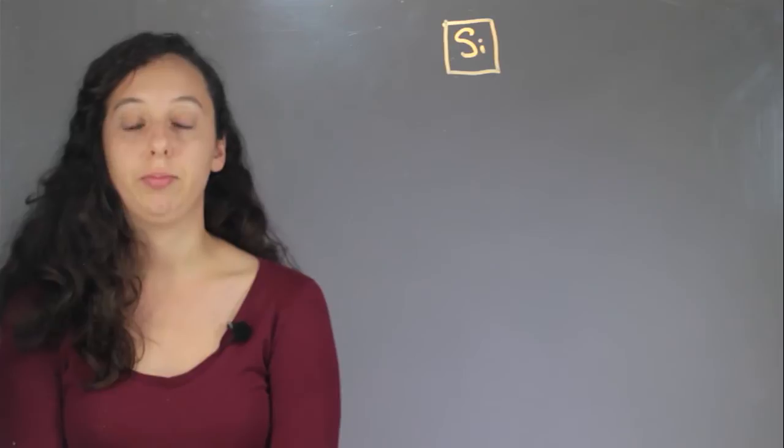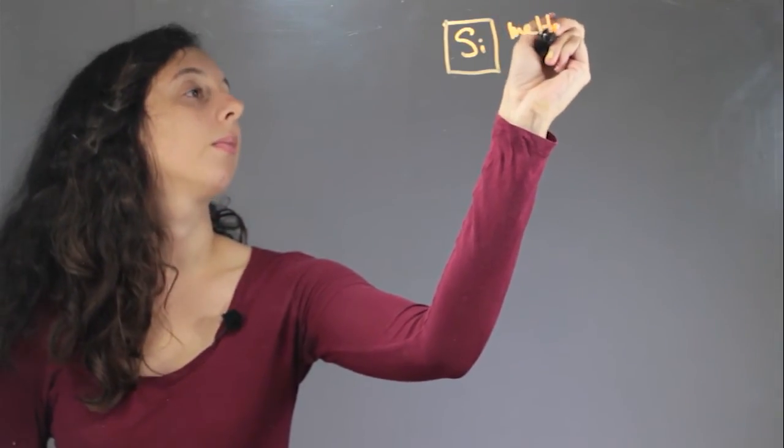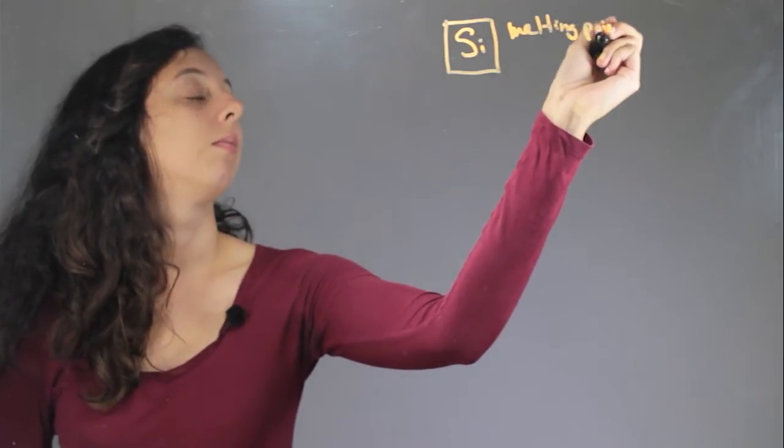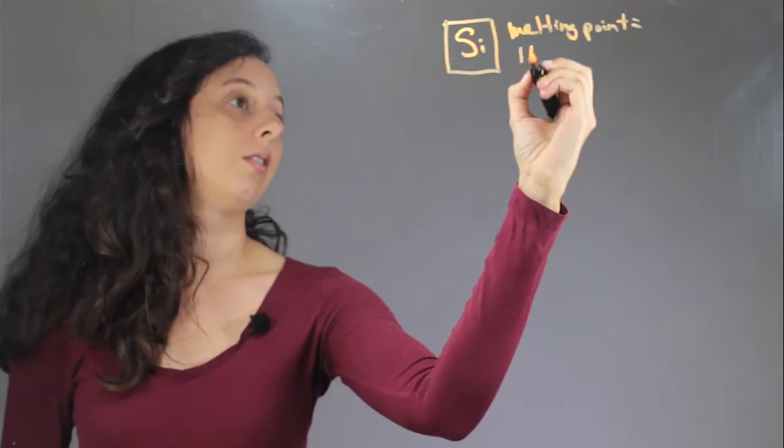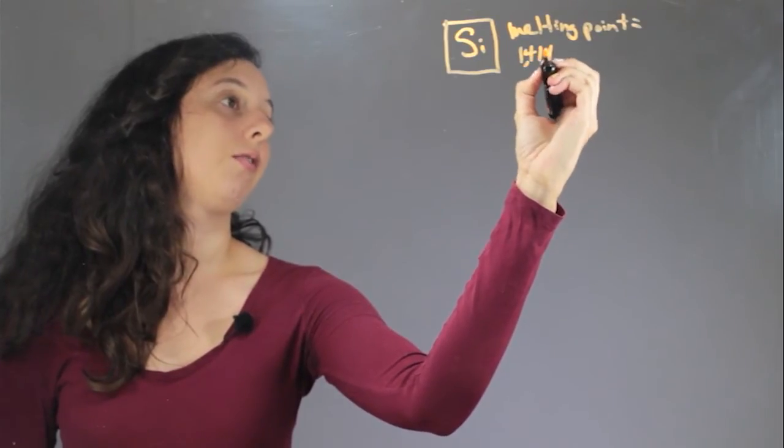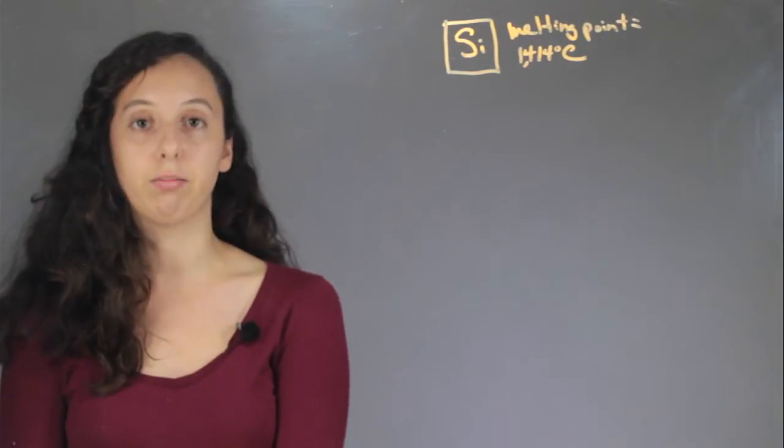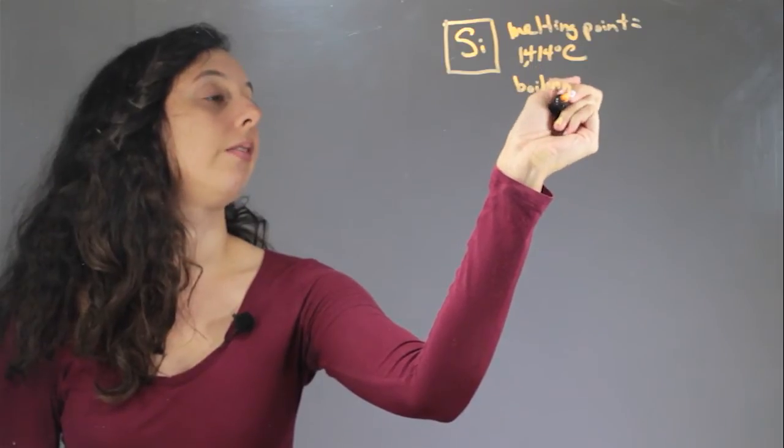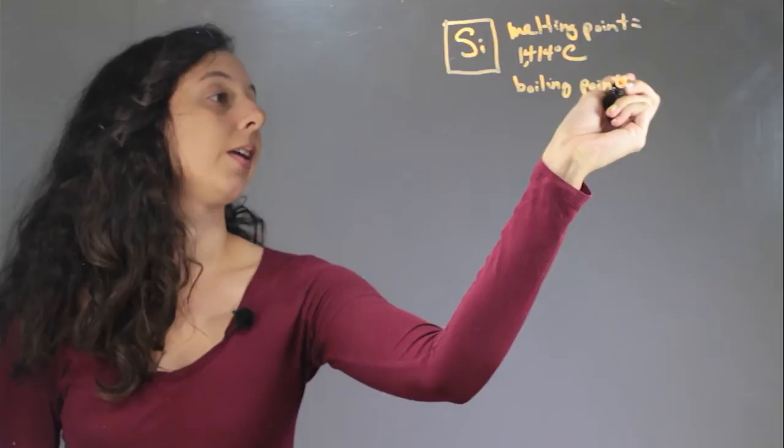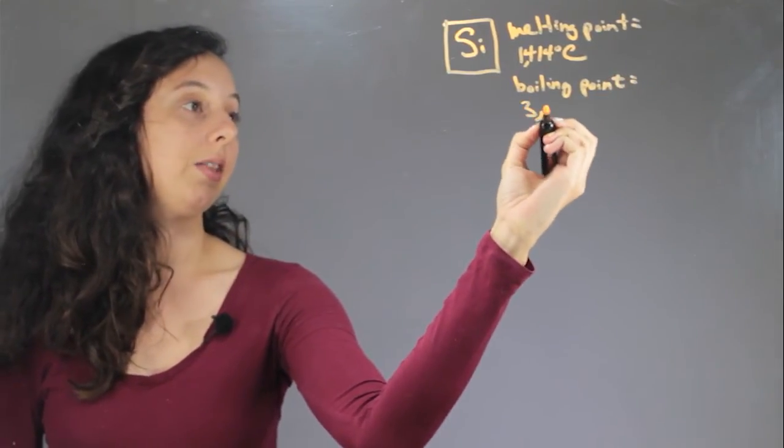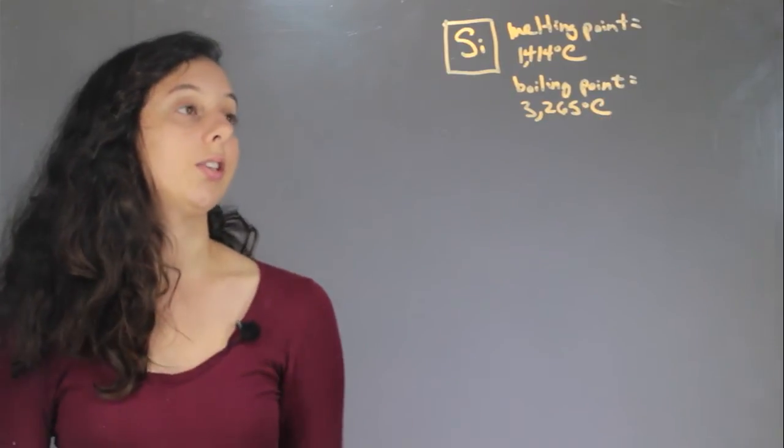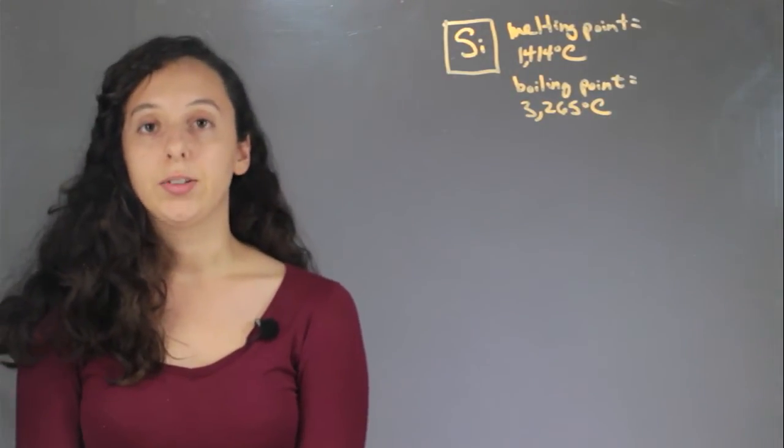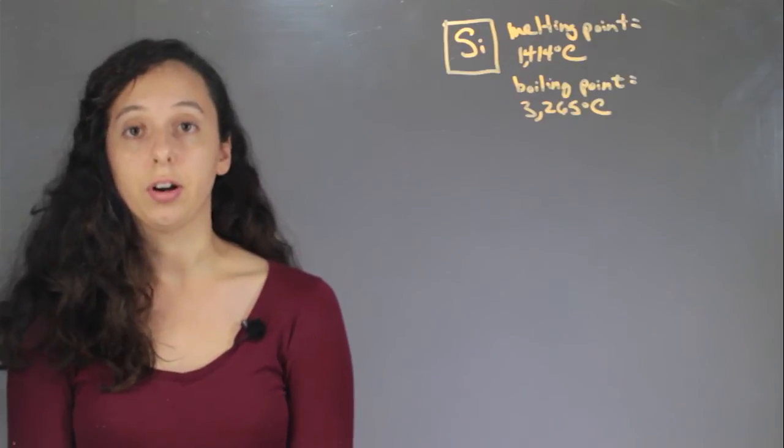Well, it's a solid at room temperature, which means that we know that its melting point and its boiling point are going to be above that, and its melting point is pretty high. It's actually 1,414 degrees Celsius, so much, much hotter than you or I ever want to be. And its boiling point is obviously higher than that. And that's actually all the way at 3,265 degrees Celsius. So it's pretty stable as a solid on most of the temperatures that are on Earth.